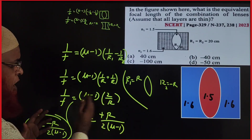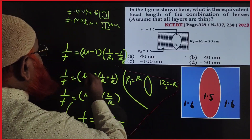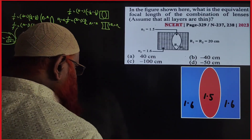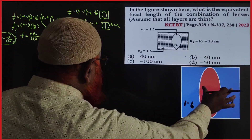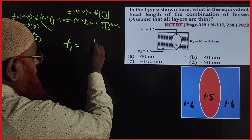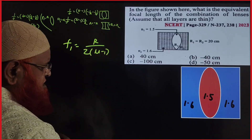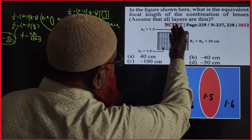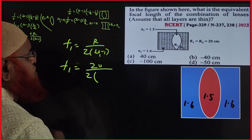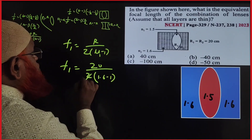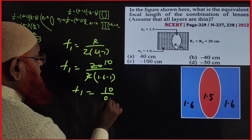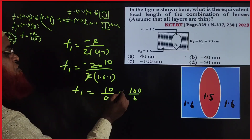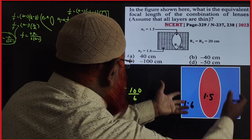Setting aside the derivations, I got two results using the lens maker's formula. For the first concave lens: f1 = −r / (2(μ − 1)). Here μ = 1.6 and r = 20, so f1 = −20 / (2 × 0.6) = −10 / 0.6 = −100/6. Don't forget the negative sign — it is a concave lens.